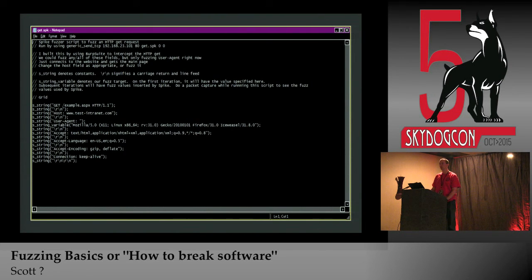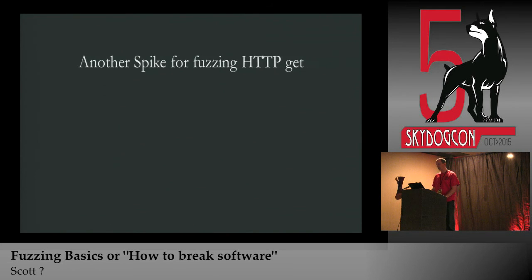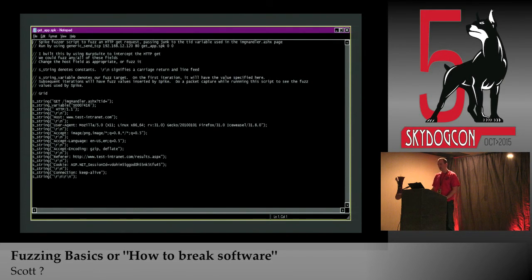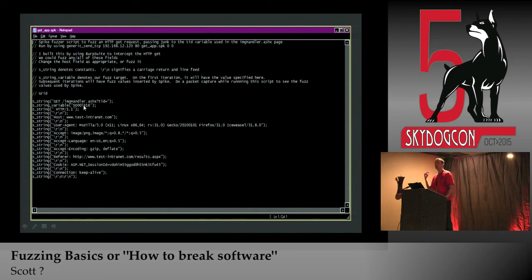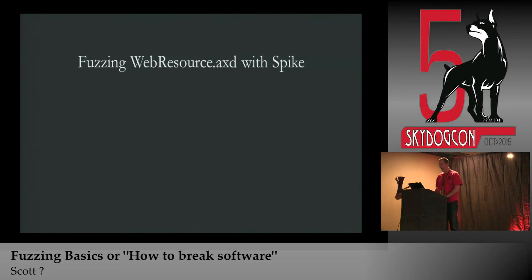When you kick off a fuzzing run with Spike it's probably going to run for a while, so you'll want to start a packet capture before so you can see the specific fuzz string that caused your crash. Another Spike example fuzzes an HTTP GET variable passed to 'imagehandler.ashx' — the first pass is a constant, then subsequently it inserts the fuzz string. There's a carriage return line feed to make sure the GET request is properly formed.